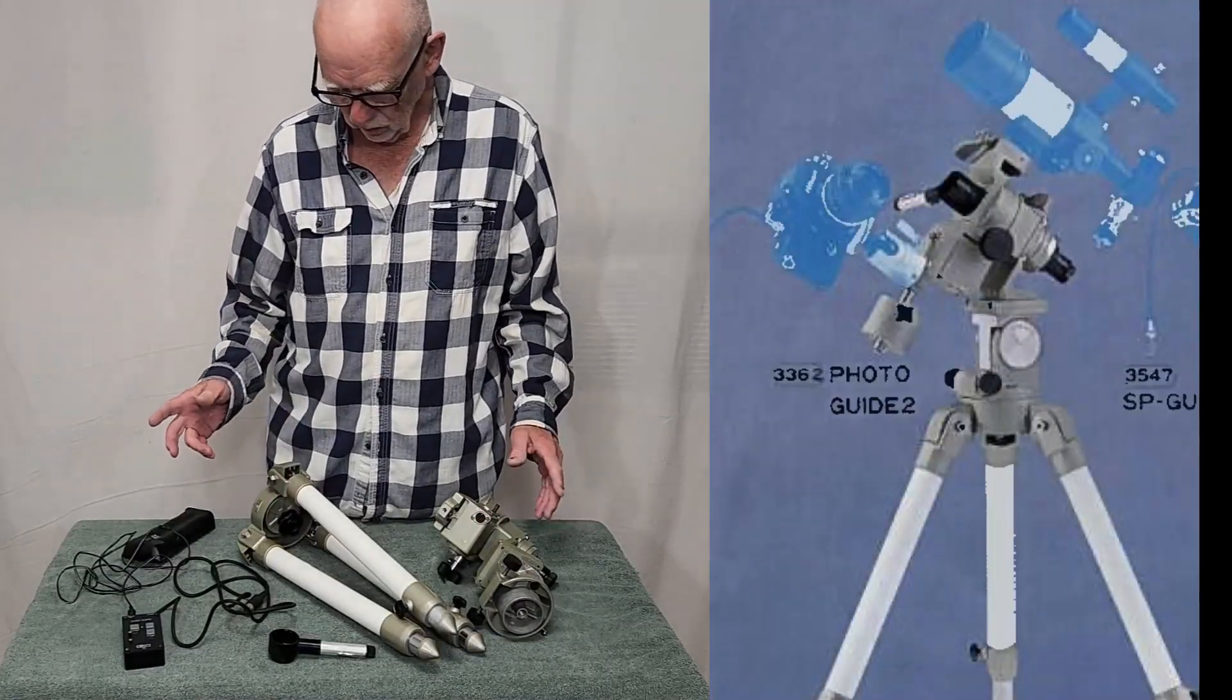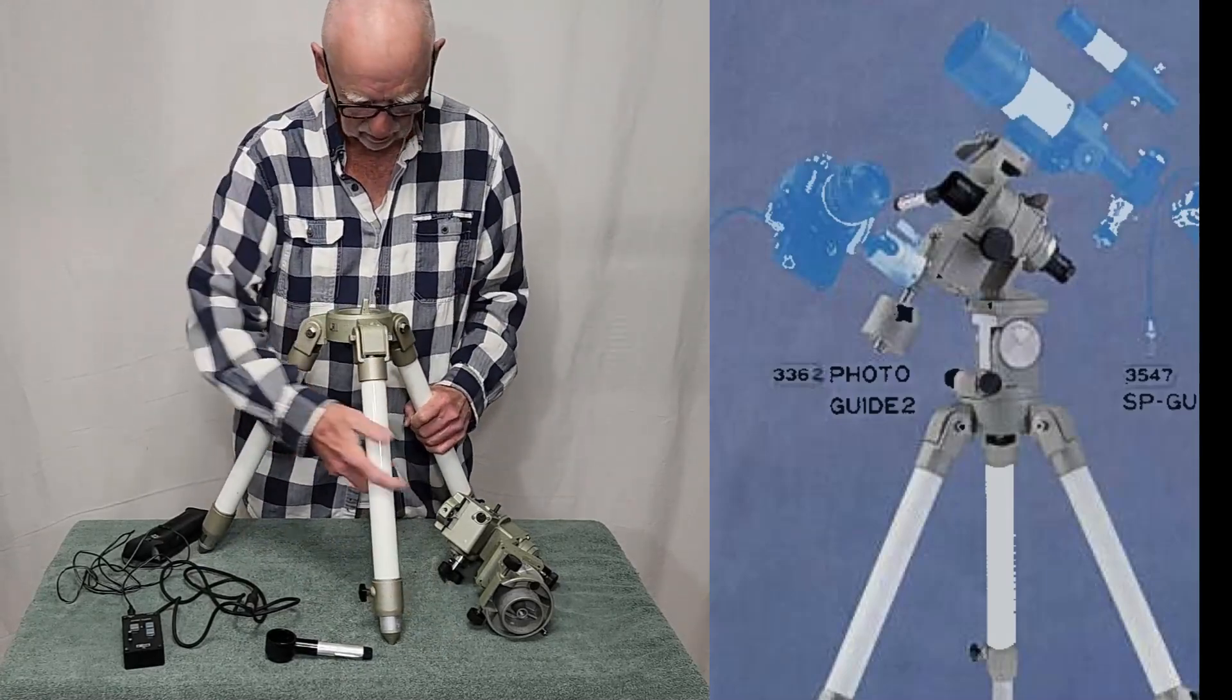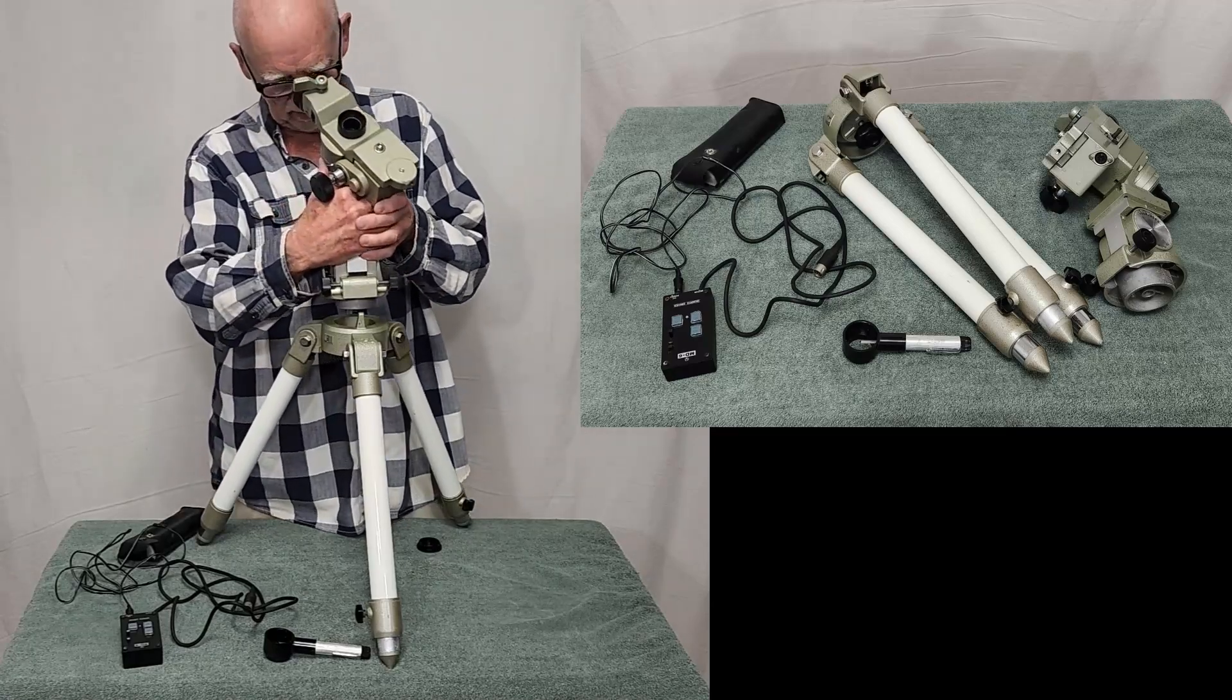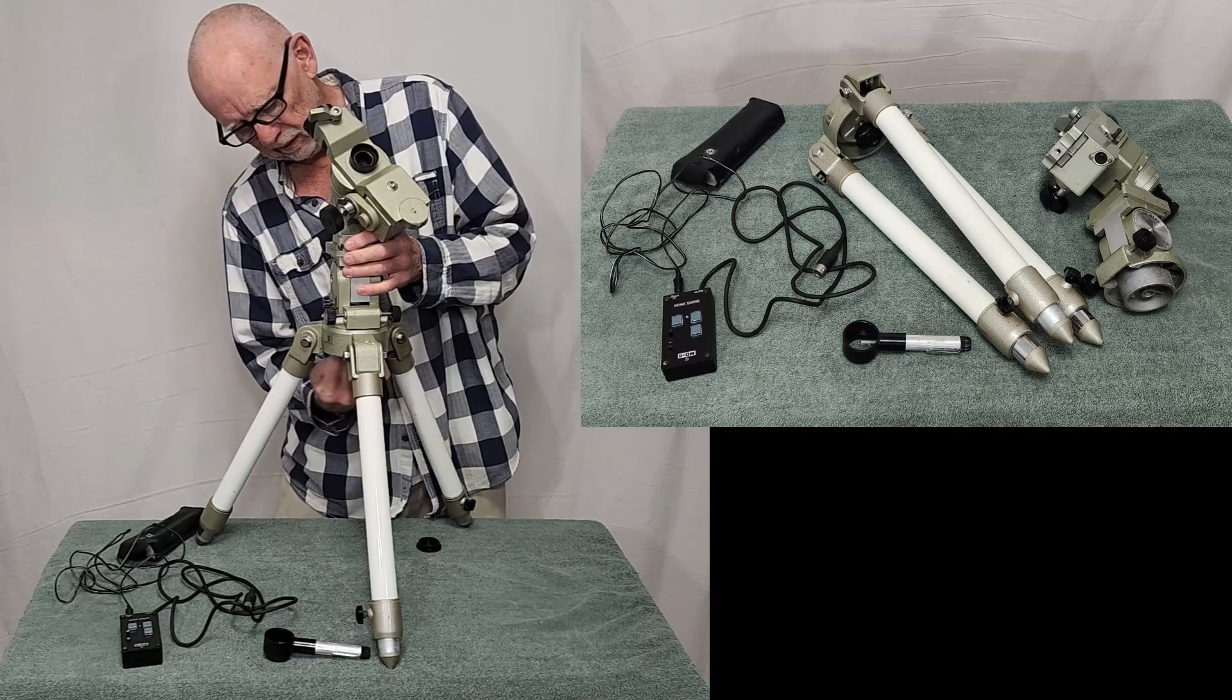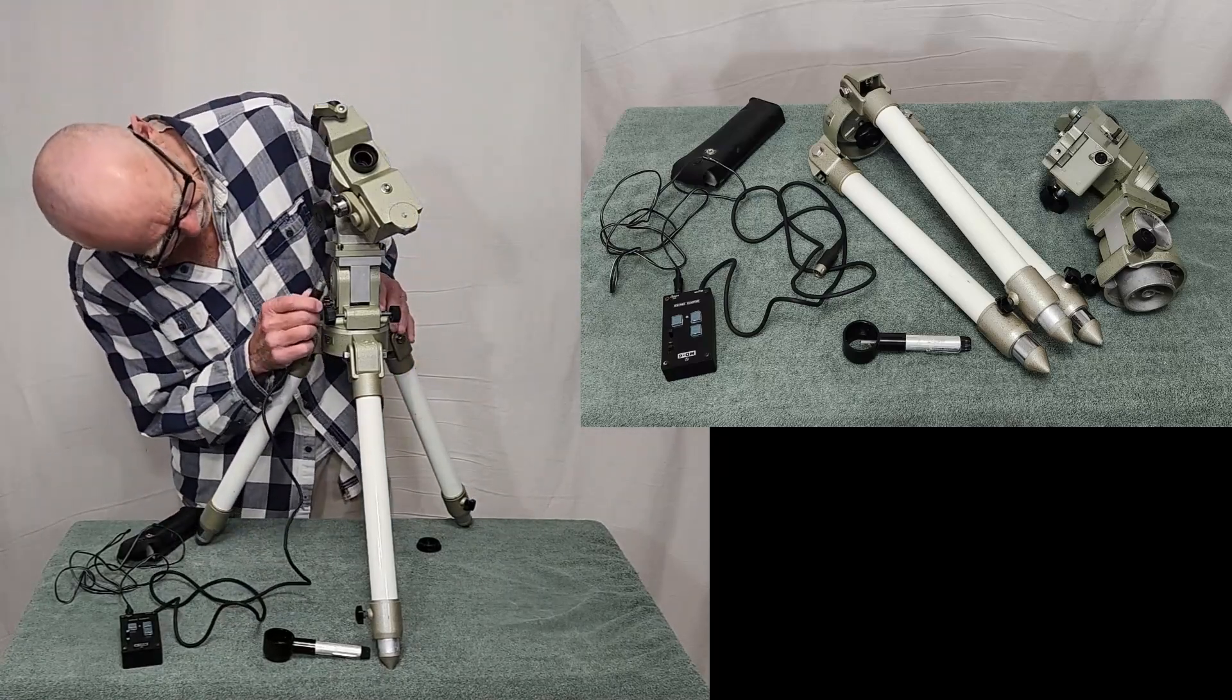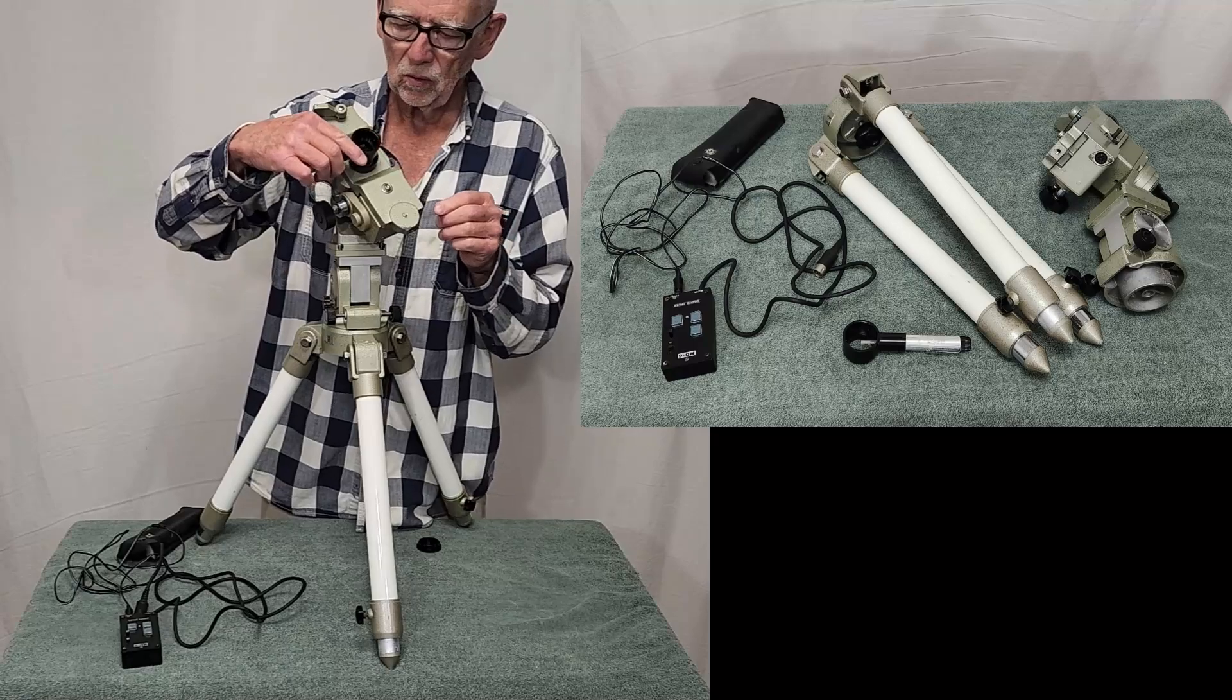The Vixen Photoguide 2 breaks down into a few small parts like this. The tripod here is all integrated. So this just goes right on here, almost any standard modern kind of a mount. Simple as can be and of course you've got your power plug right in here and your polar illuminator up here.